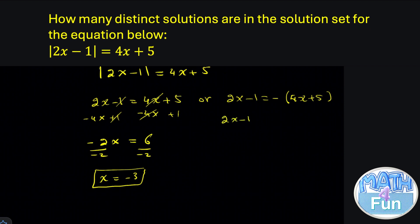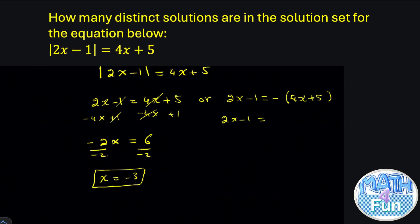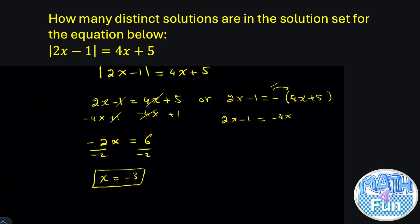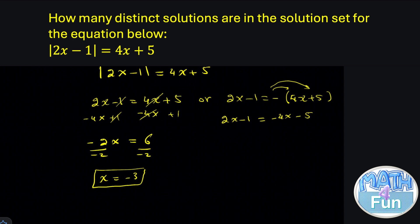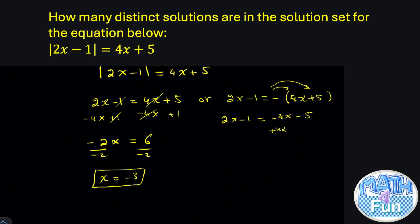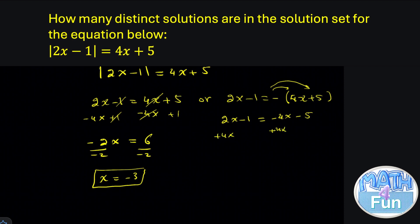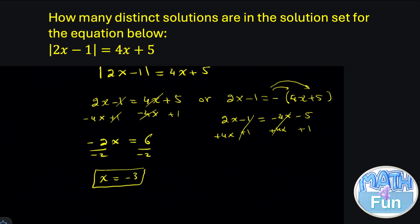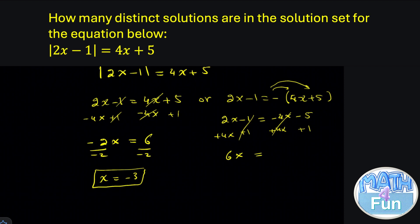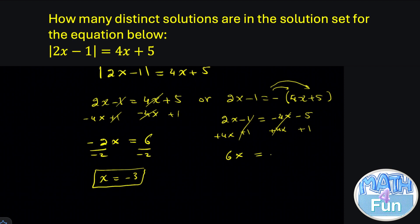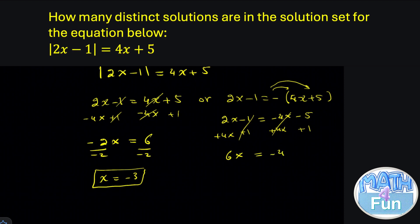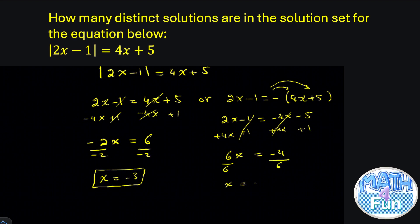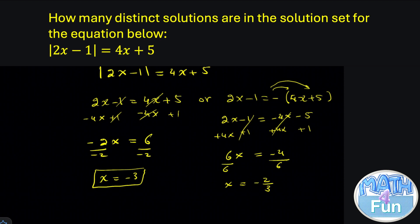Let's try the second one. 2x minus 1 is equal minus multiplied by 4x. You get minus 4x minus by 5. You get minus 5. Now plus 4x plus 4x plus 1 plus 1. Cancel. You get 2 plus 4 which is 6x is equal. Minus 5 plus 1 which is minus 4. Divide by 6. You get x is equal to minus 4 over 6. Which is minus 2 over 3.